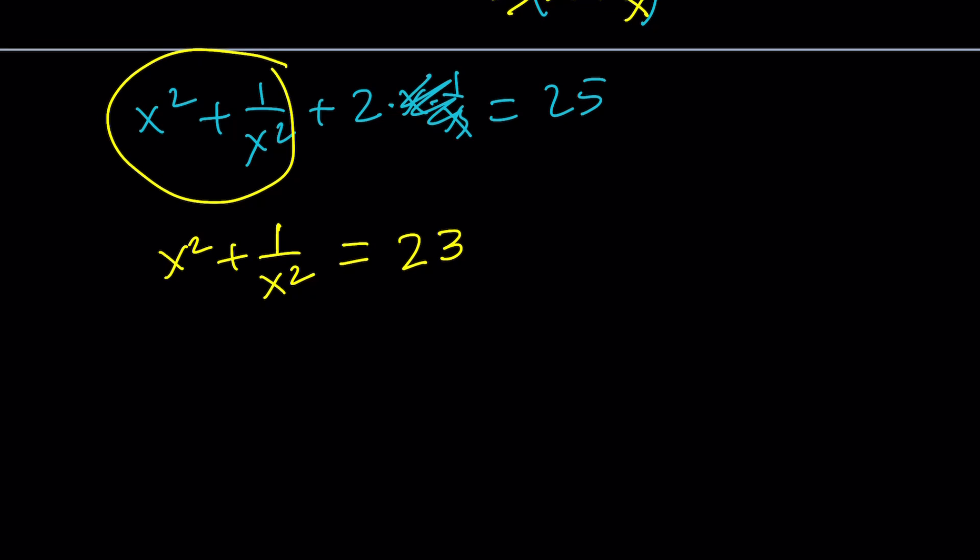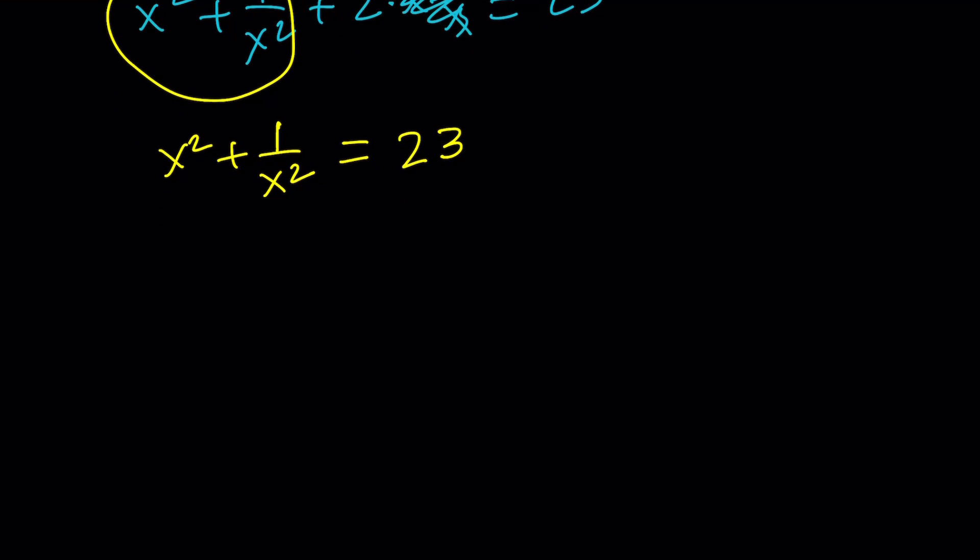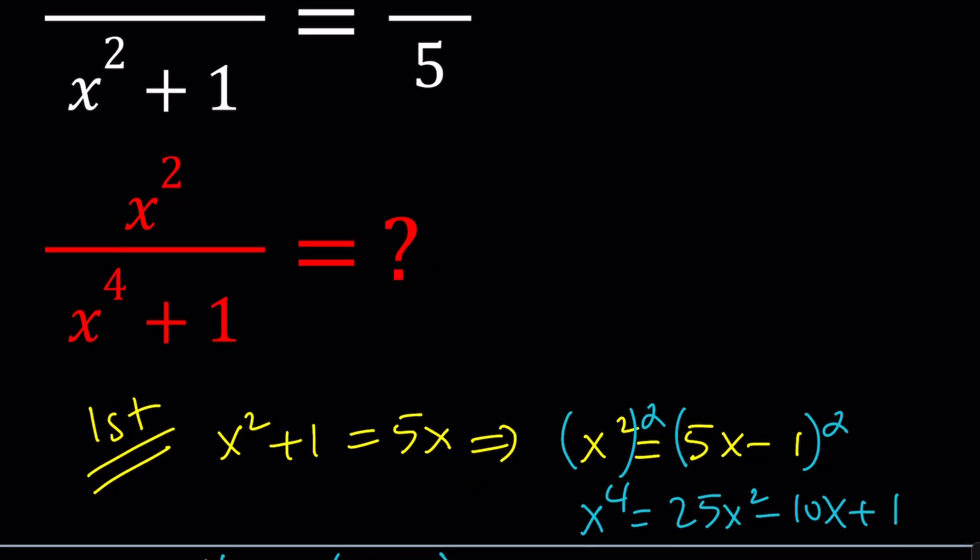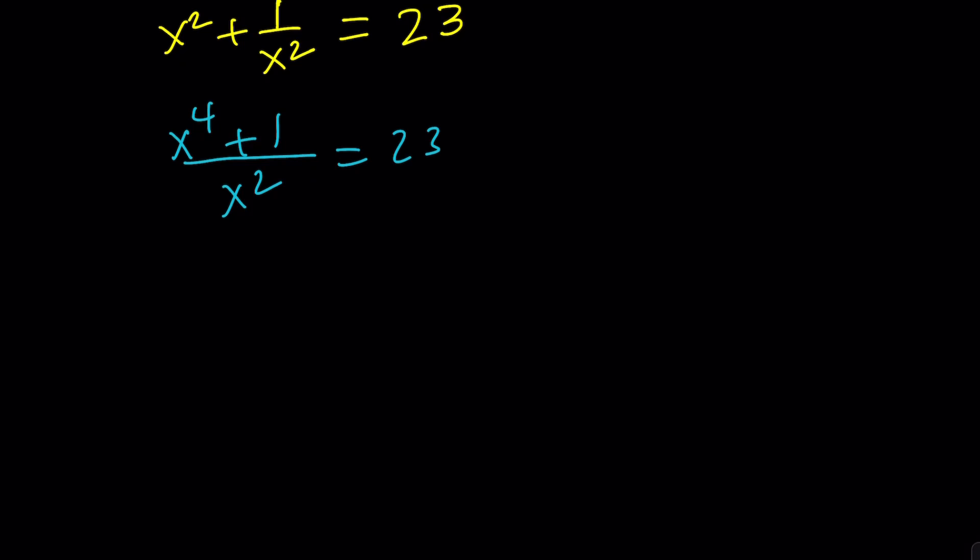If you remember the first method, this should look familiar, but let's pretend we don't. And now we're going to make a common denominator. That's going to give us x to the fourth plus 1 over x squared equals 23. And remember what the problem was asking for? x squared divided by x to the fourth plus 1. Exactly the reciprocal of this expression. x squared over x to the fourth plus 1 is just going to be the reciprocal of 23, which is 1 over 23.